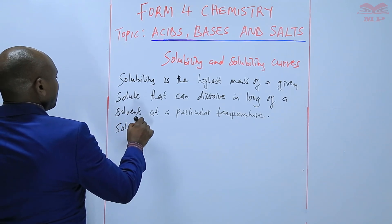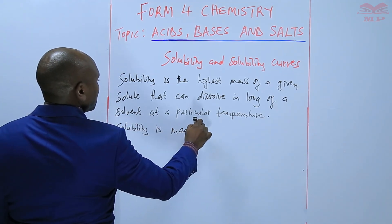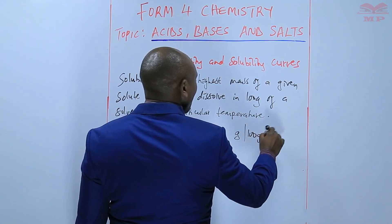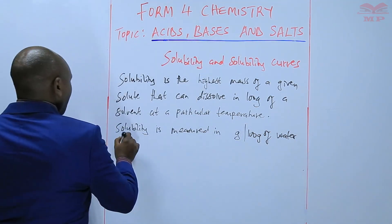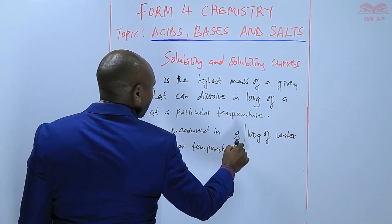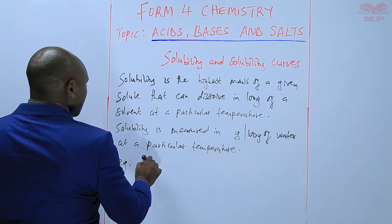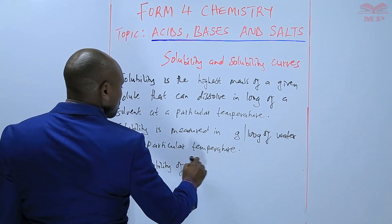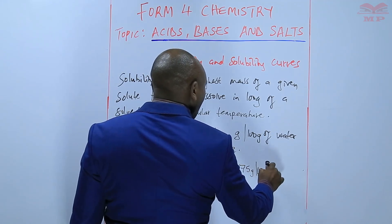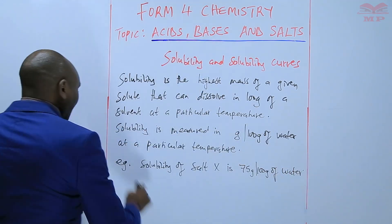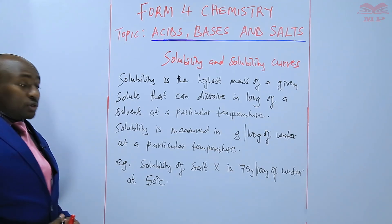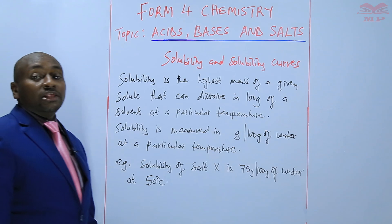Solubility is measured in grams per 100 grams of water at a particular temperature. For example, we can say that the solubility of salt X is 75 grams per 100 grams of water at 50 degrees Celsius.